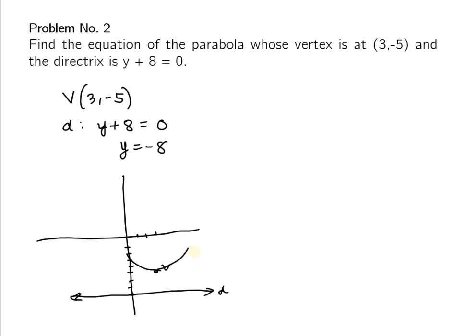If it opens upward, the equation is in the form (x - h)² = 4p(y - k). We already have h = 3 and k = -5. The value of p is the distance from the vertex to the directrix. From -5 to -8 is 3 units, so p equals 3.